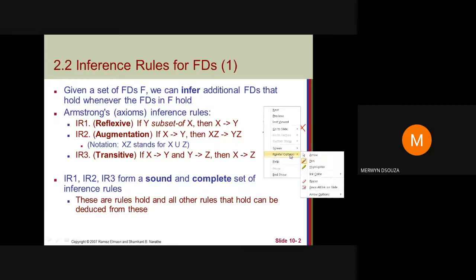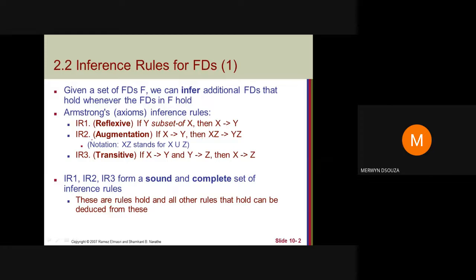The second inference rule is augmentation: if X determines Y, then we can say X union Z determines Y union Z. The third rule is transitivity: if X determines Y and Y determines Z, then X determines Z.